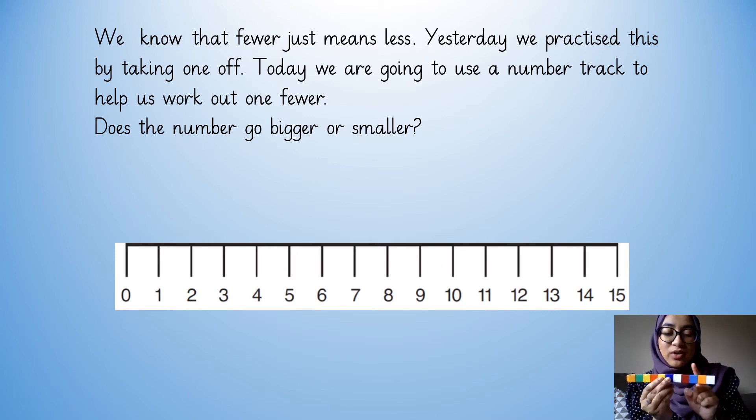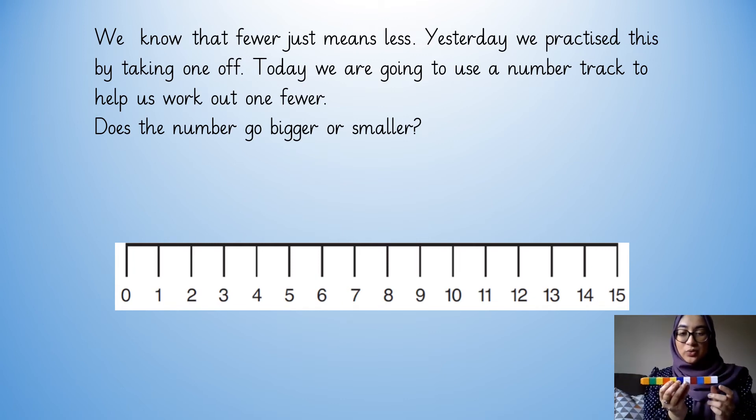Let's count. 1, 2, 3, 4, 5, 6, 7, 8, 9, 10, 11. So I've got 11 now. So I started off with 12. Now I've got 11. So that means one fewer than 12 is equal to 11.